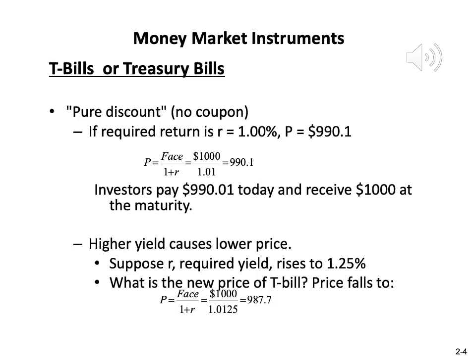When you purchase the T-bills, you buy at a pure discount. It's called a pure discount because there is no coupon during the holding period — you can think of coupon as interest payment during the holding period. For T-bills, there are no coupon payments at all during your holding period. Your whole return comes from the discount from the face value. For example, if the market rate is 1%, the price will be $1,000 divided by 1 plus 1% discount rate, so you pay $990 today and receive $1,000 at the end of maturity.